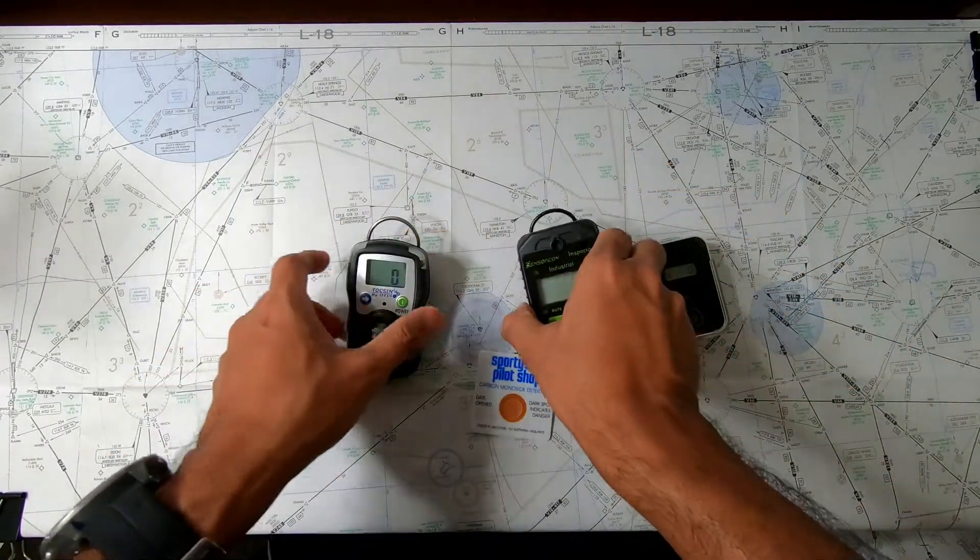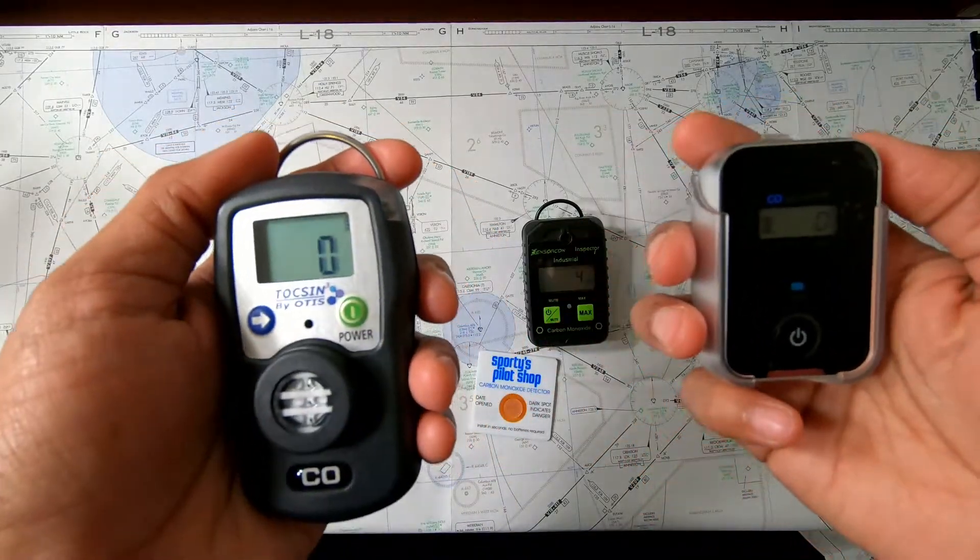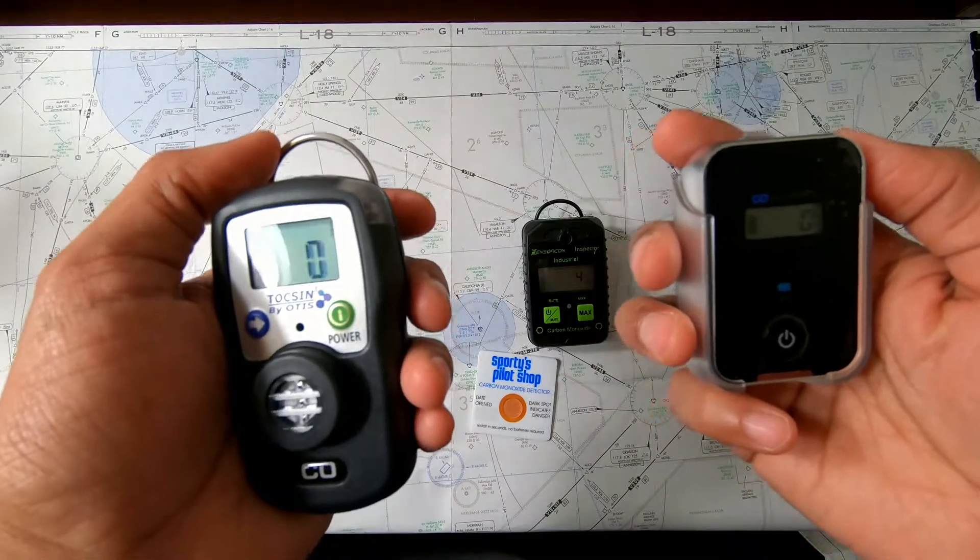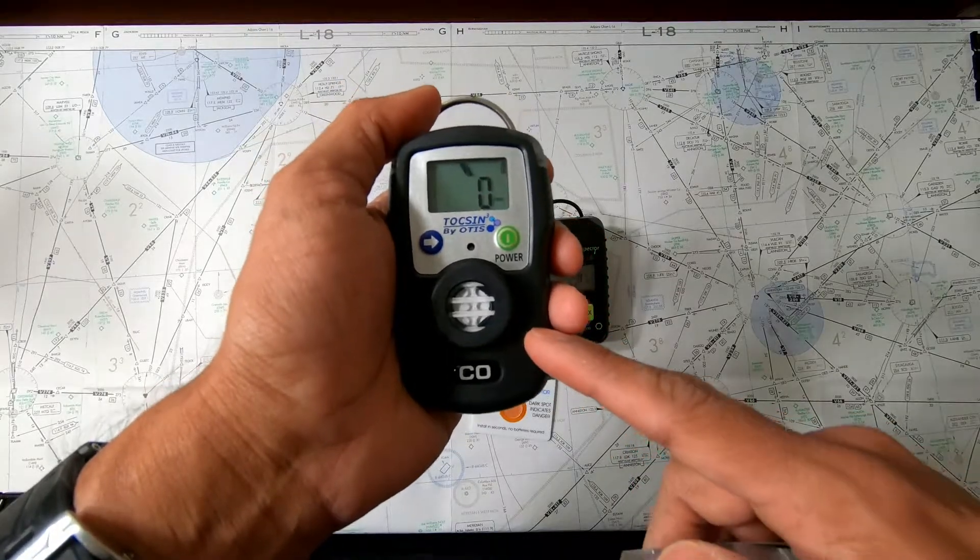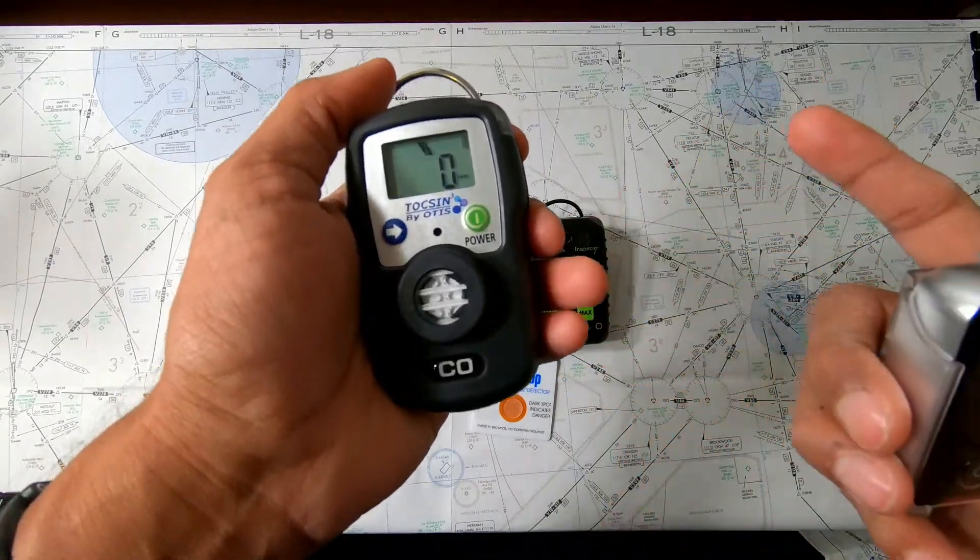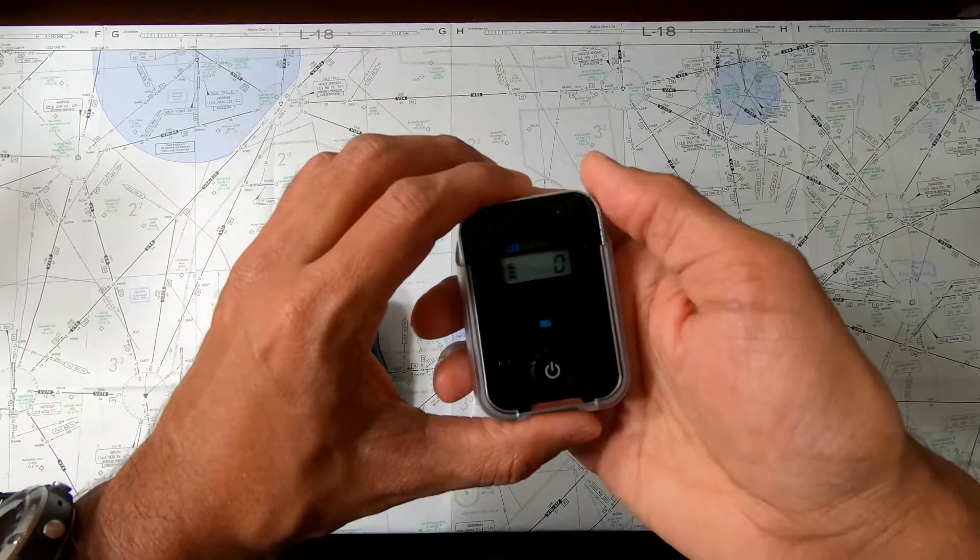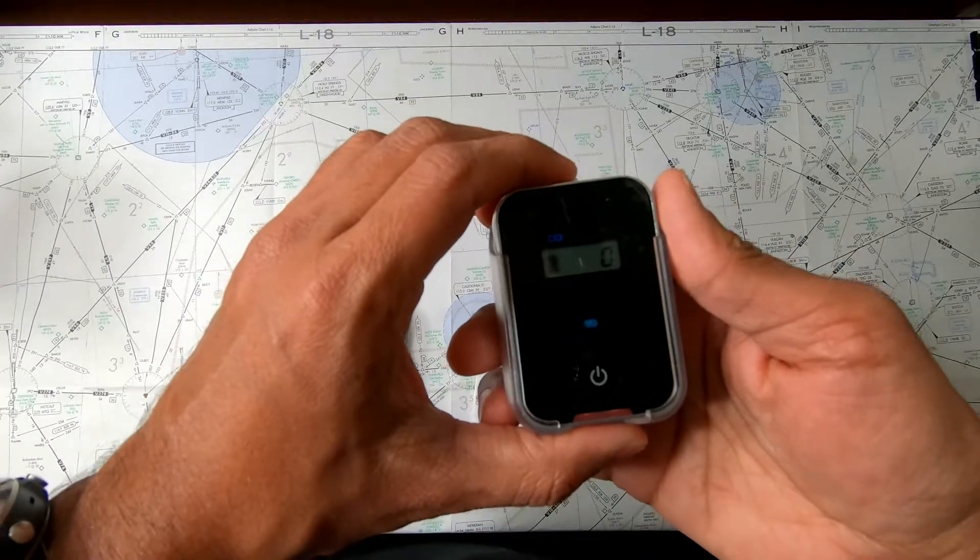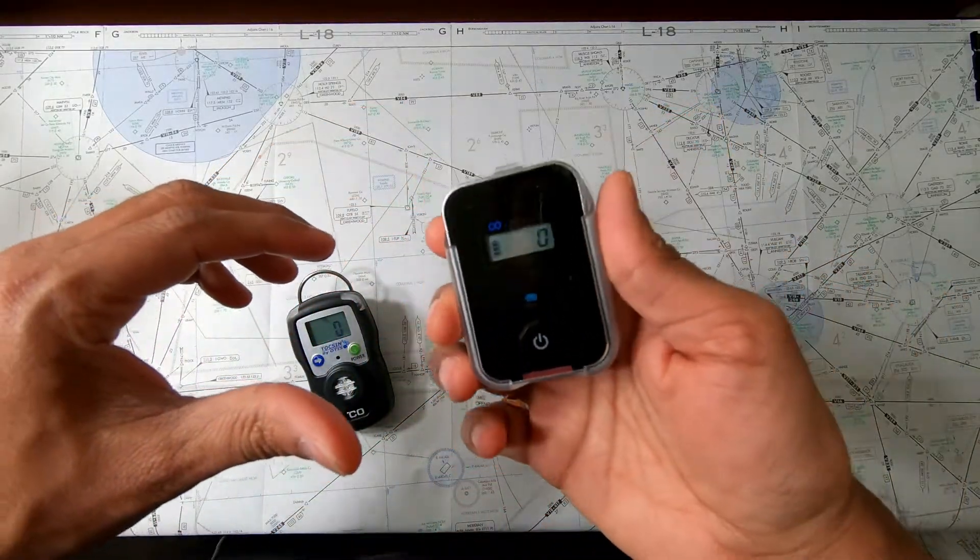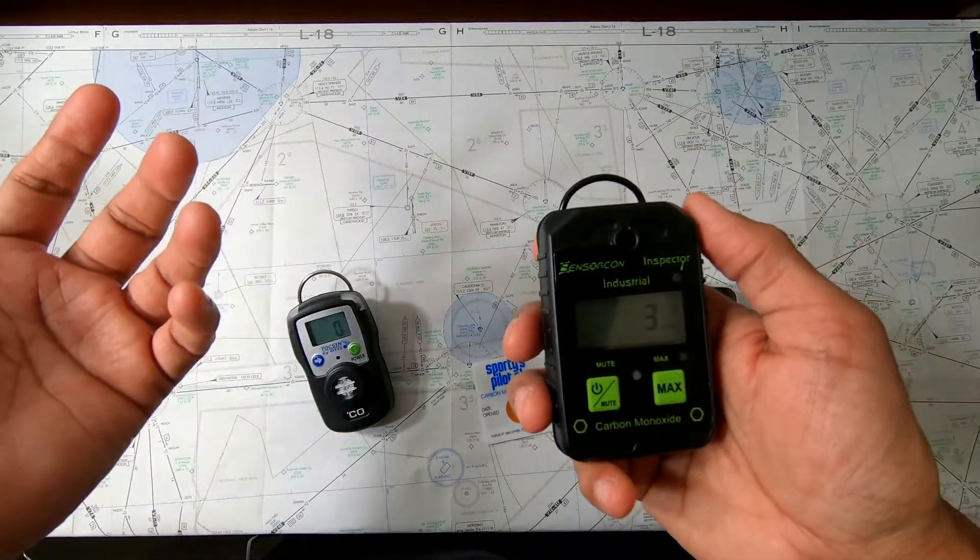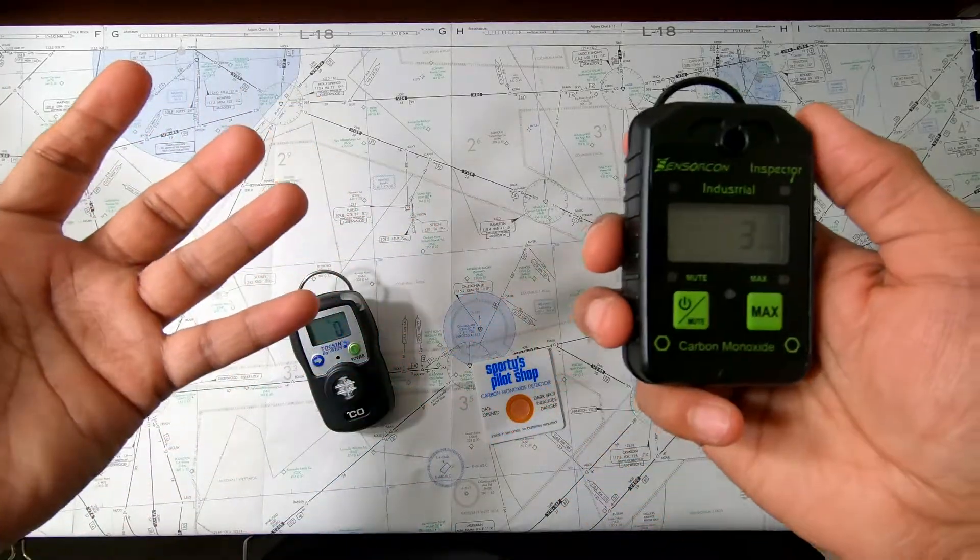Okay, so here comes the caveats. These two units, I believe, feature electrochemical sensors and these sensors need to be replaced at regular intervals. According to the manufacturer, the Tocsin 3 sensor needs to be replaced every two years. Of course, it depends on the usage. That's the recommended replacement. The sensor itself costs $85. Small unit by Forensics, they recommend replacing the device every three years. So this device actually has an expiration date. This unit, I did not see any sensor replacement recommendations. However, they do recommend calibrating the unit every few years.